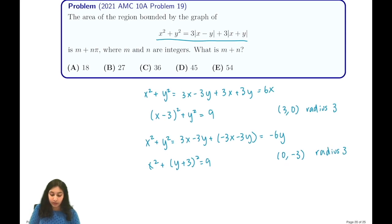For our other two equations, we do a similar process. We have x² + y² = 3y - 3x + 3x + 3y. This is equal to 6y, so we have x² + (y - 3)² = 9. This is a circle of center (0, 3) with radius 3.